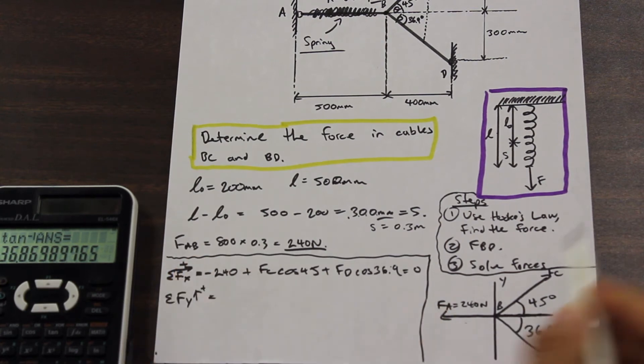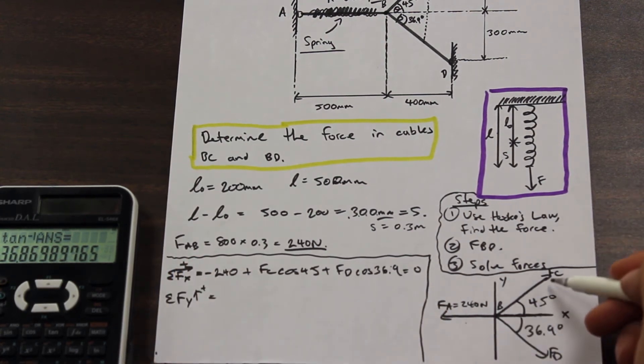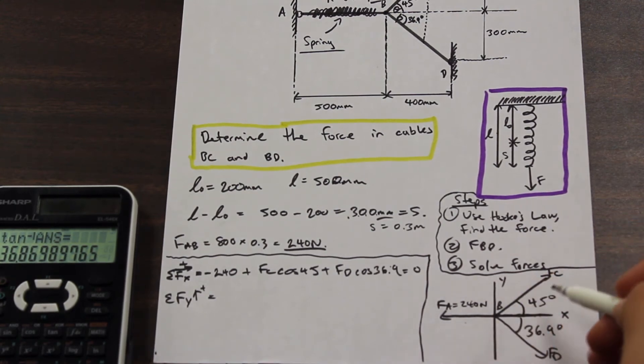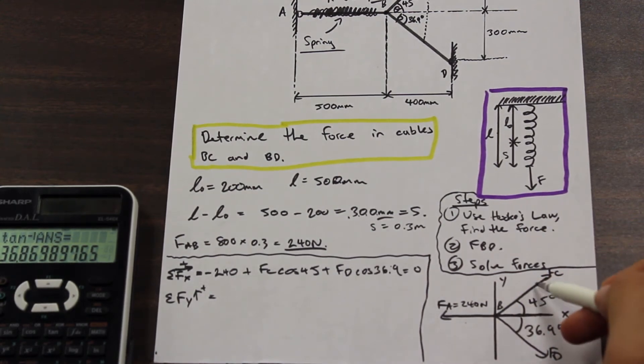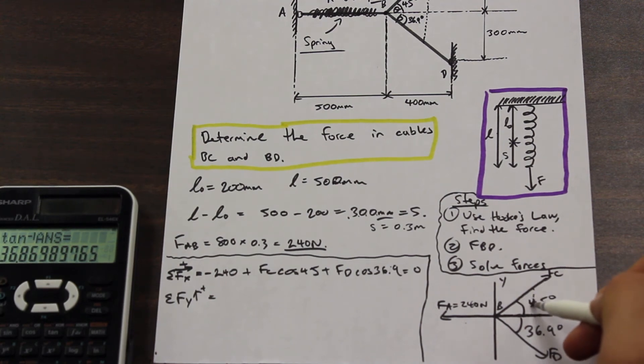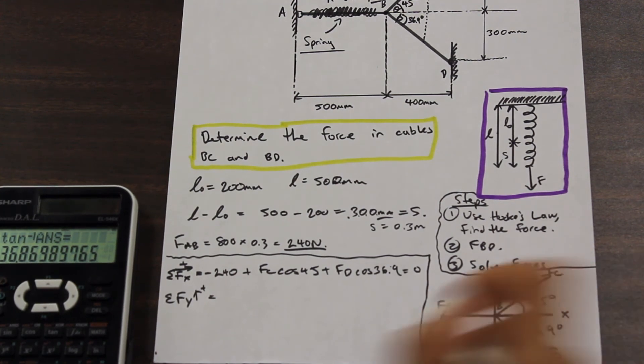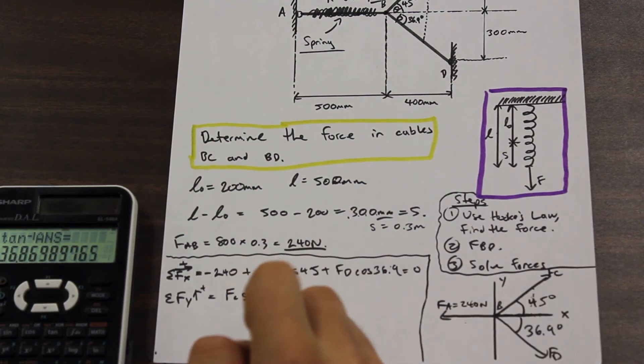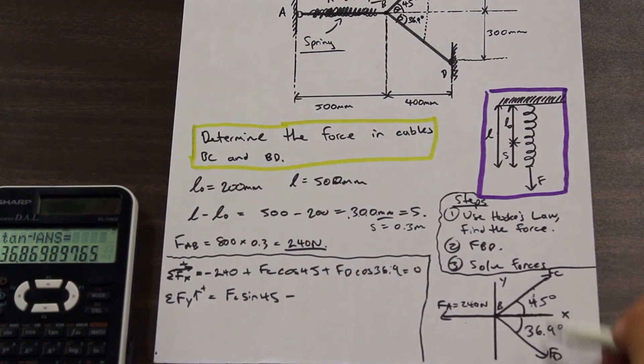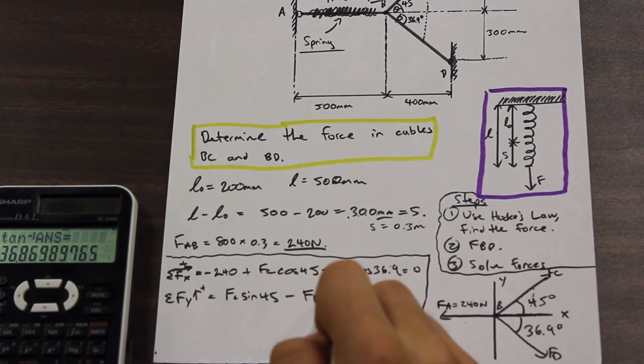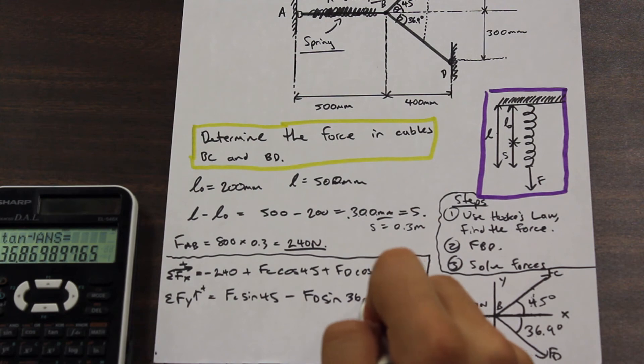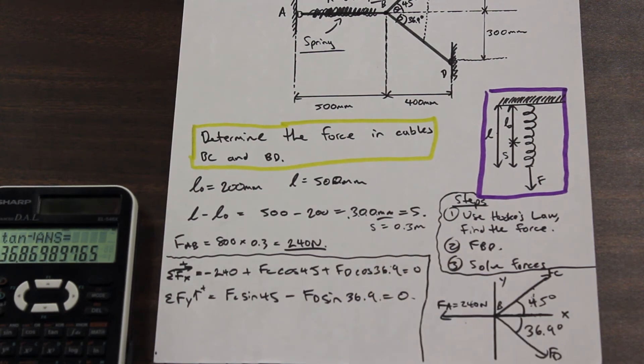So let's go ahead and solve for the forces in the y direction now. Same thing we have FC. FA doesn't exist in the y direction so we can ignore that and we want to use sine now because the opposite side of this triangle is going to give us our y component of that force. So we have FC acting upwards sine 45 minus FD is now going down, it's in the negative y direction and we want to use sine again. So we have FD sine 36.9 equals zero.